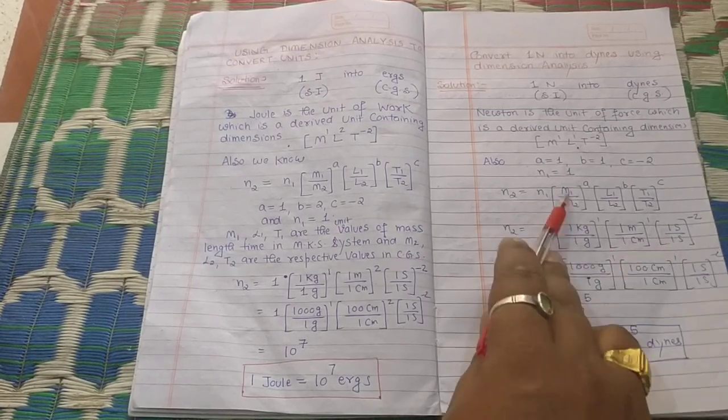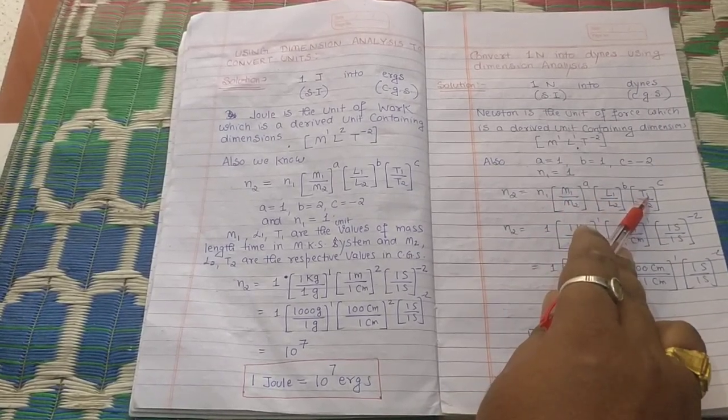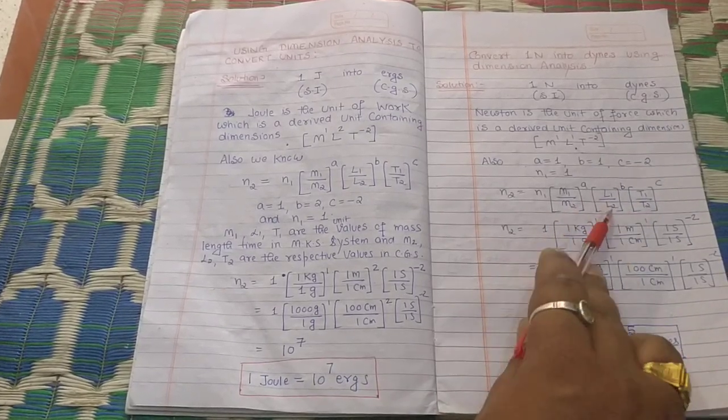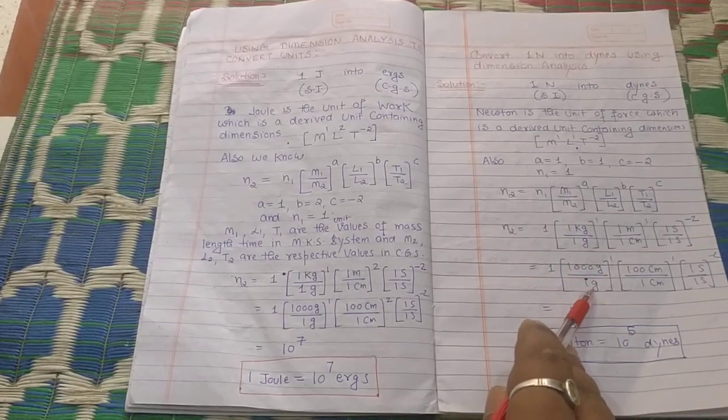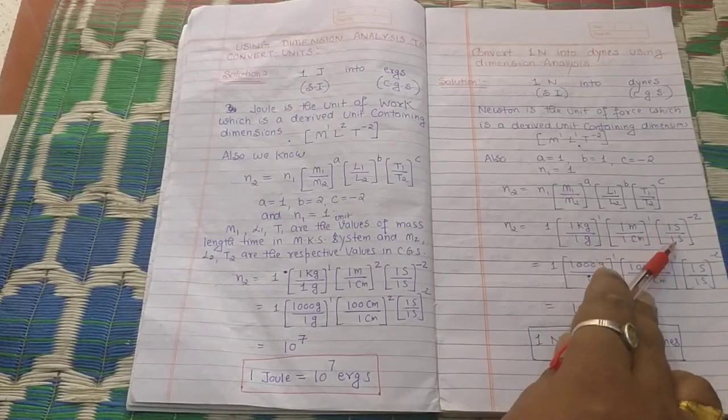M₁, L₁, T₁ are in MKS since Newton is in MKS. M₂, L₂, T₂ are in CGS since dyne is in CGS. So you need to convert kilograms into grams: 1000 gram / 1 gram. 1 meter = 100 centimeters. And 1 second = 1 second, same in both systems.